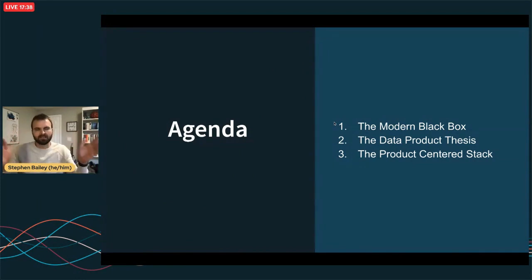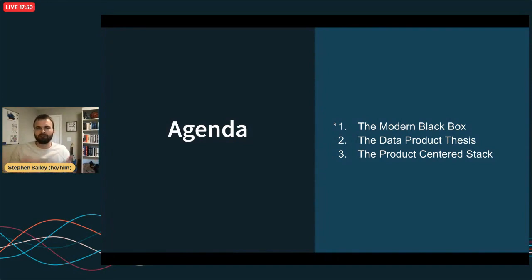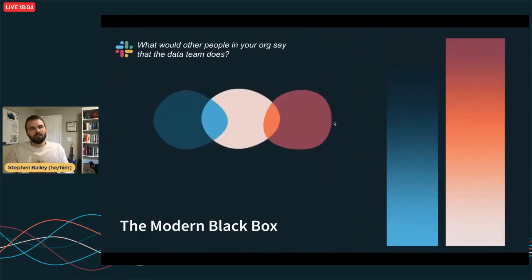We're going to break this talk into three sections. The first is the problem we're talking about — I call it the modern black box problem. Then we'll talk about the data product thesis, which I believe is a potential remedy to the black box problem. And finally, how our team at Immuta started taking product-centered thinking and reorganizing our data stack to support that thinking.